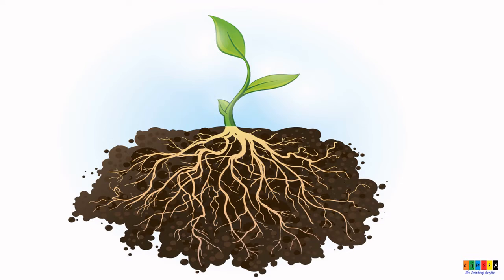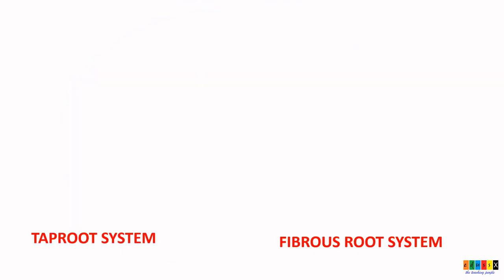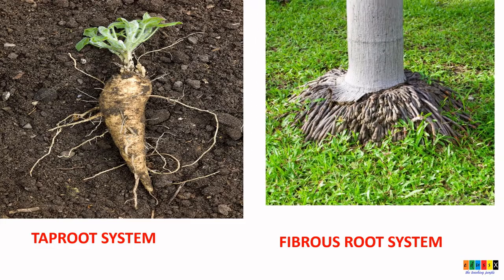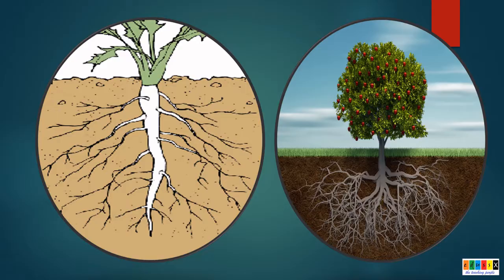When we consider the root system, we have two types: tap root system and fibrous root system. When we look into the tap root system, it consists of a single main root. This grows straight down into the ground and it forms smaller roots called lateral roots. This can be seen in examples like mango, neem, etc. This type is called the tap root system.